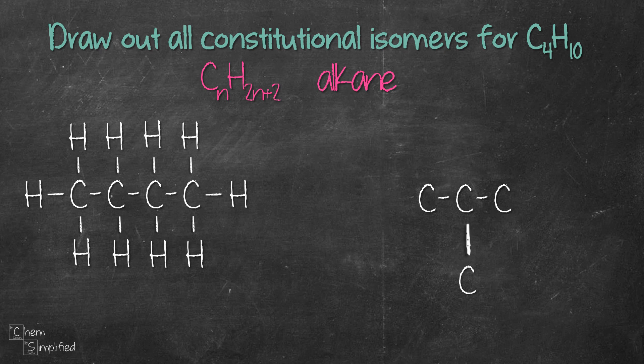Now what if we place the remaining carbon at the end like this? Is this another isomer? Well actually it's not. We've already drawn this guy, look. It has four carbon connected straight in a row.